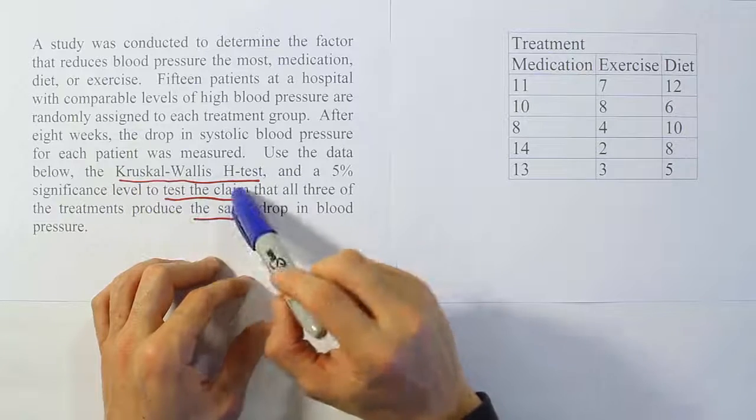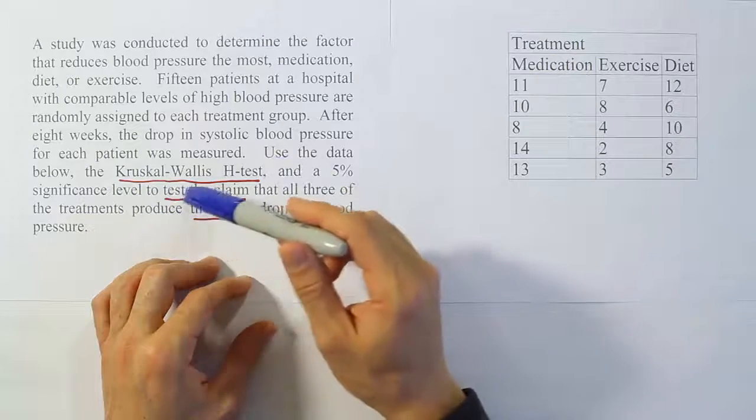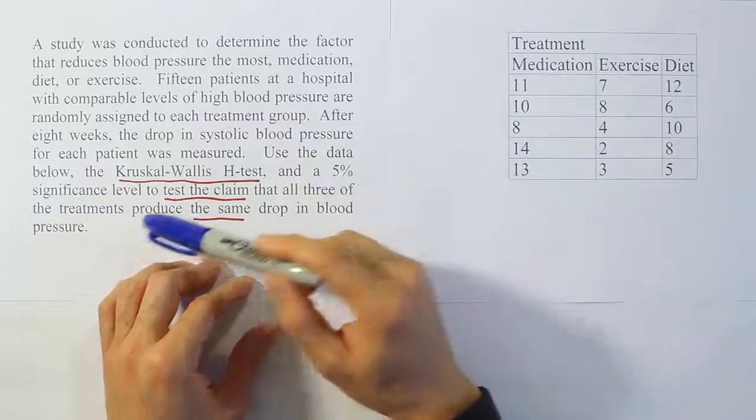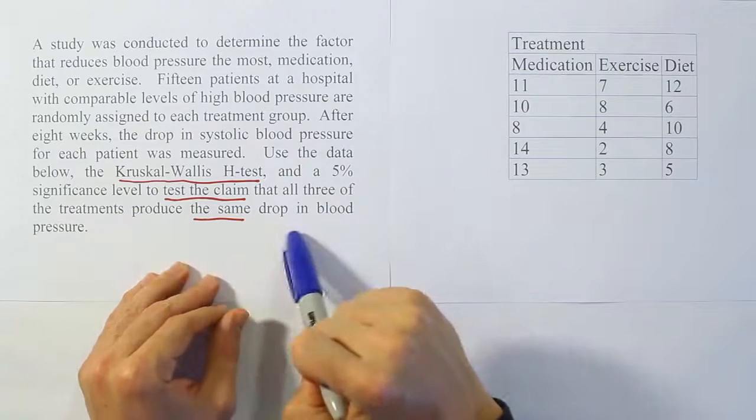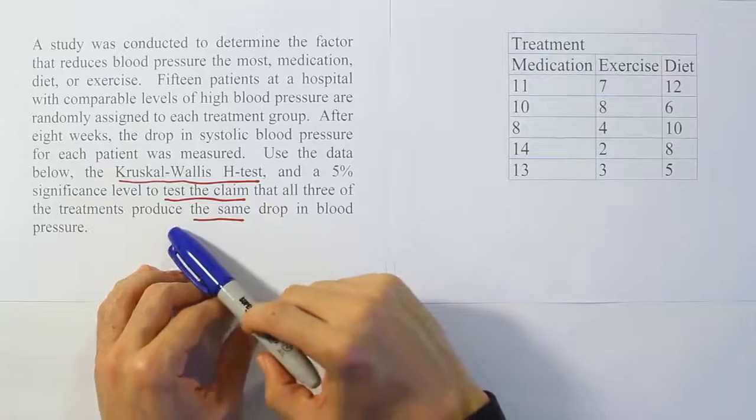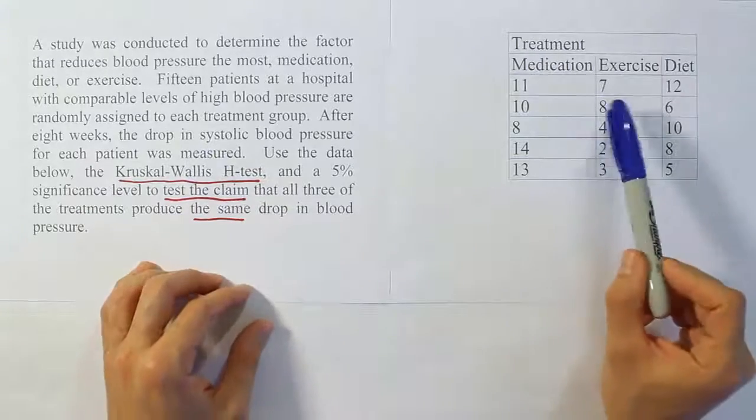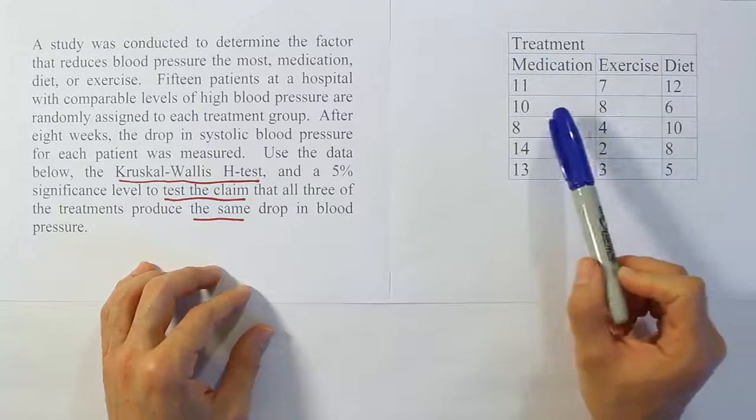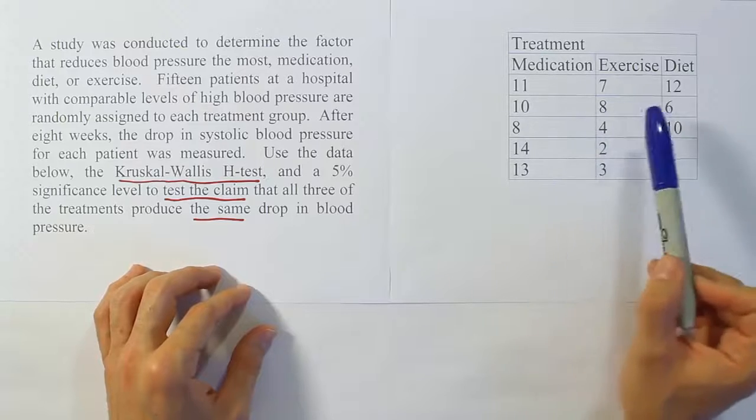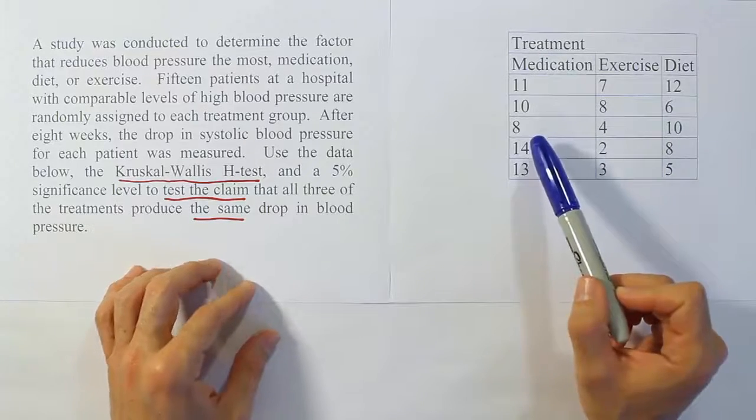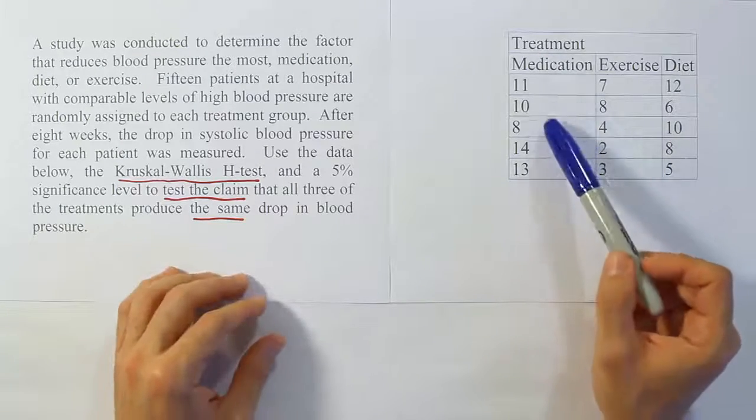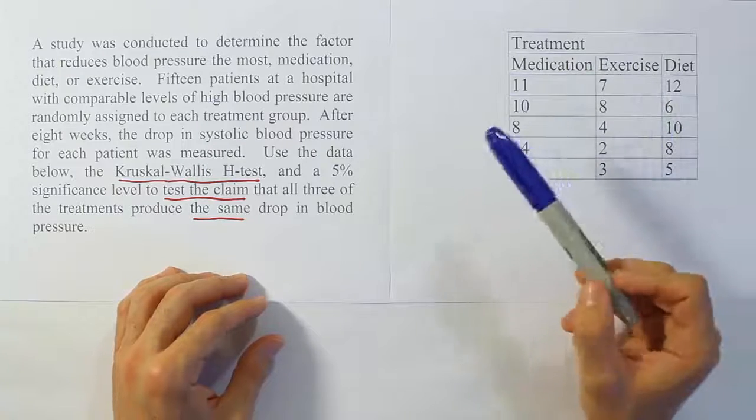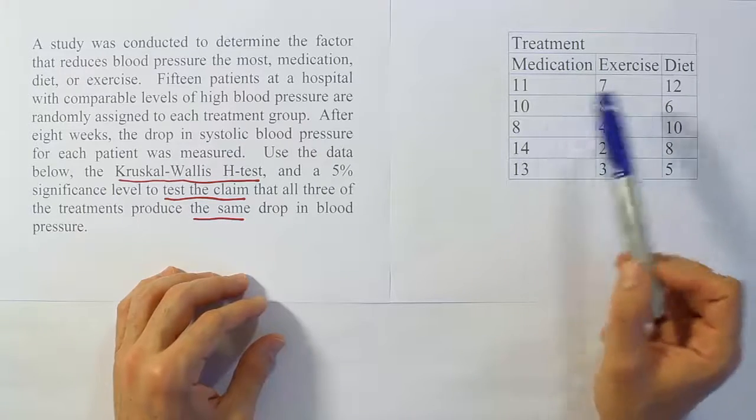Use the data below, the Kruskal-Wallis H-Test, and a 5% significance level to test the claim that all three of the treatments produce the same drop in blood pressure. The problem comes from a completely randomized design experiment. They took patients who had high blood pressure and randomly assigned them to each one of the three treatments.